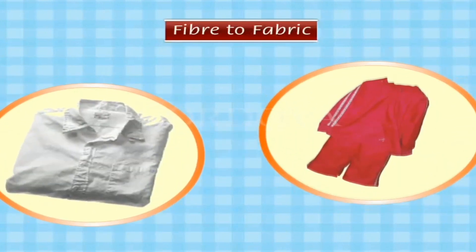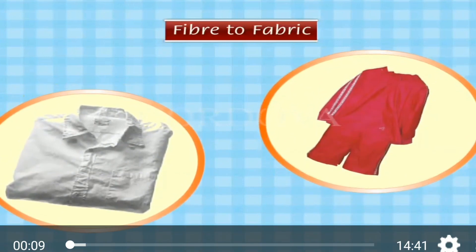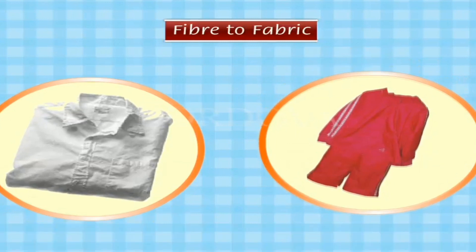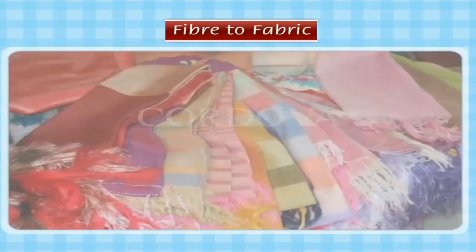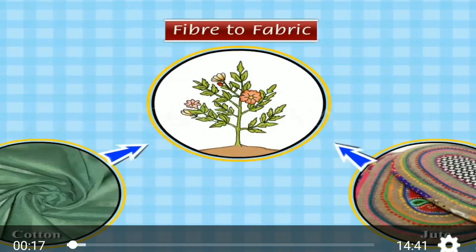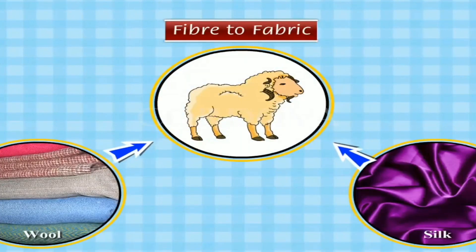We know that fibers are long, strong and flexible thread-like structures that are used to make fabrics. Natural fibers are obtained from plants and animals. Cotton and jute fibers are obtained from plants, whereas wool and silk fibers are obtained from animals.